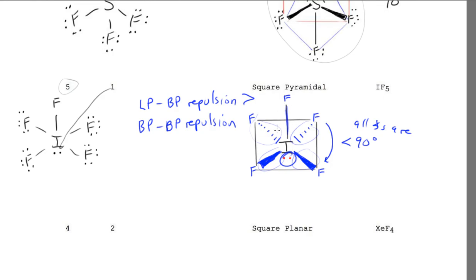It's repelling less than this lone pair of electrons at the bottom. That's why we say lone pair, bonding pair repulsion is greater than the bonding pair, bonding pair repulsion. And all angles are less than 90.